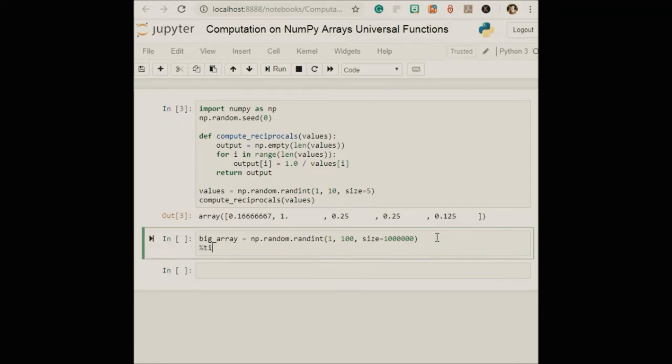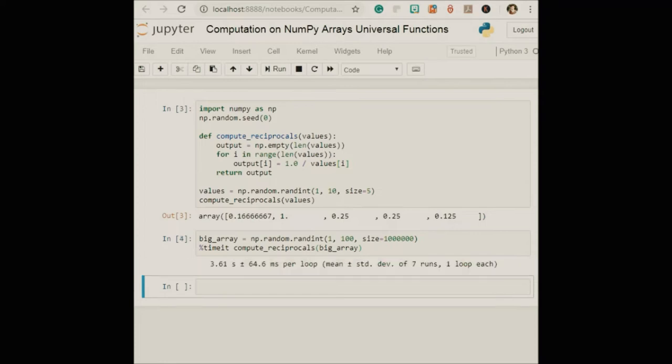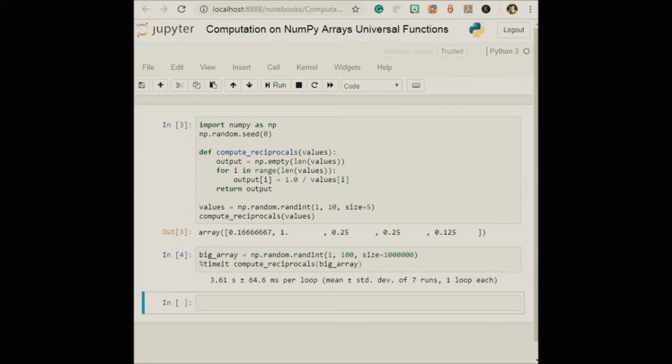Time it, compute_reciprocals big array. Now give some time. It takes several seconds to compute these million operations and to store the result, when even cellphones have processing speeds measured in gigaflops. And here we got the result: 3.61 seconds plus minus 64.6 milliseconds per loop, which is mean plus minus standard deviation of seven runs in one loop each.